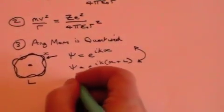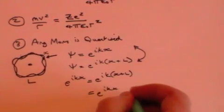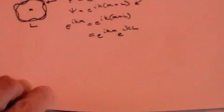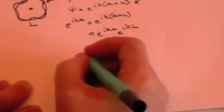So e to the i k x must equal e to the i k x plus L. And that can be written e to the i k x times e to the i k L. The e to the i k x cancels and you end up with e to the i k L equals 1.